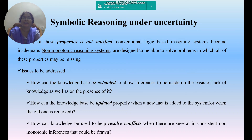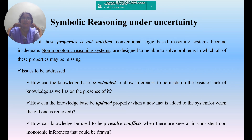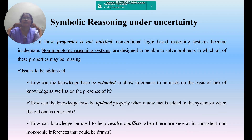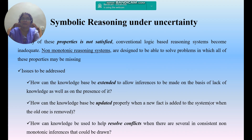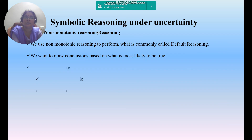Non-monotonic reasoning systems handle uncertainty very well. The issues to be addressed include: how can the knowledge base be extended to allow inferences based on a lack of knowledge, how can the knowledge base be updated properly using inadequate information, and how can knowledge be used to help resolve conflicts in several inconsistent and non-monotonic references.